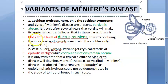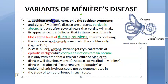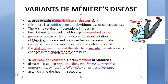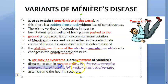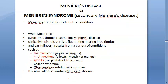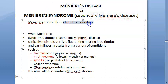Variants of Meniere's disease include: cochlear hydrops — cochlear symptoms only, no vertigo; vestibular hydrops — vertigo only, no hearing problem; and drop attacks, also called Tumarkin's otolithic crisis, where dysfunction of the macula in the utricle and saccule causes sudden falls. Lermoyez syndrome is a variant where hearing loss comes first, followed by attacks of vertigo.